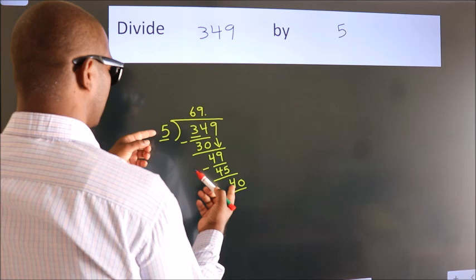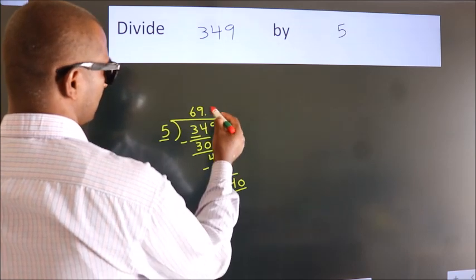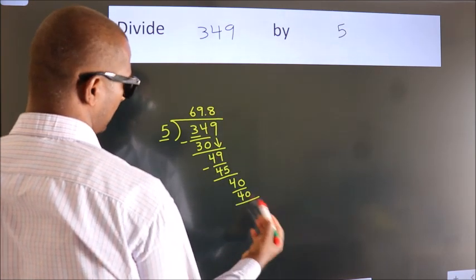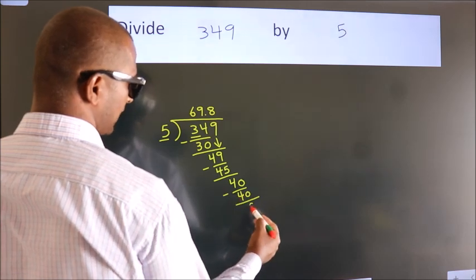When do we get 40 in the 5 times table? 5 times 8 equals 40. Now we subtract. We get 0.